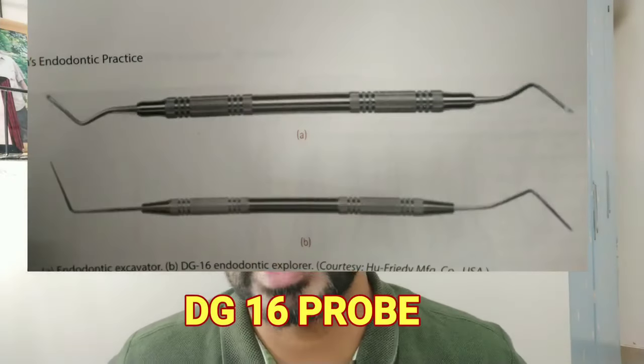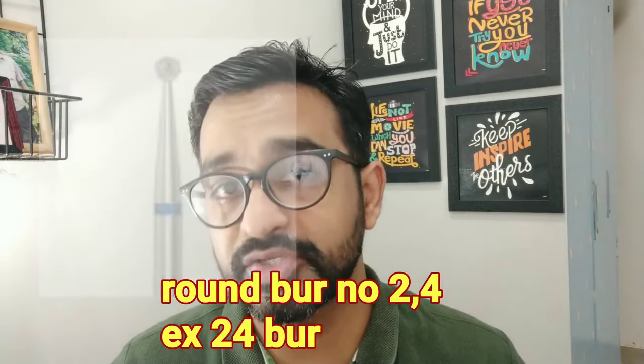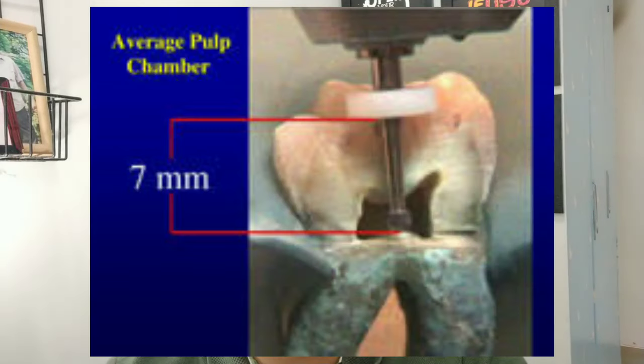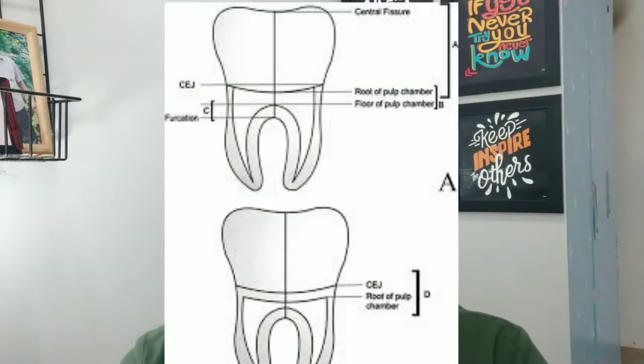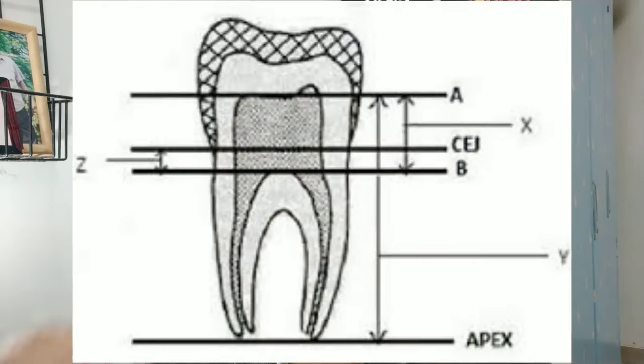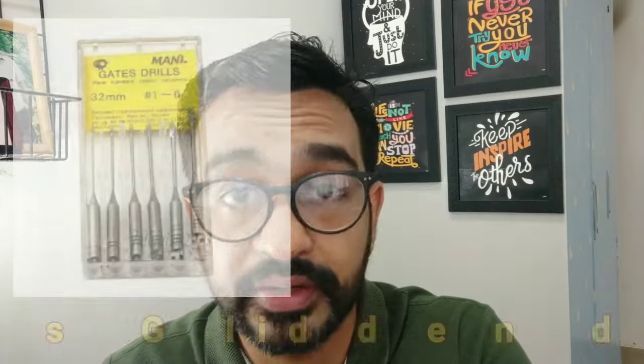The first instrument essential for every beginner is the DG-16 probe, which you need to have in your clinic. There is one important landmark always essential while doing root canal treatment — that is the cemento-enamel junction (CEJ) of any tooth. The CEJ is the gold standard to find the floor of the pulp chamber. You should not go beyond the CEJ of any tooth even if you are not getting the canal openings. The CEJ is the baseline from where you will not extend your cavity.